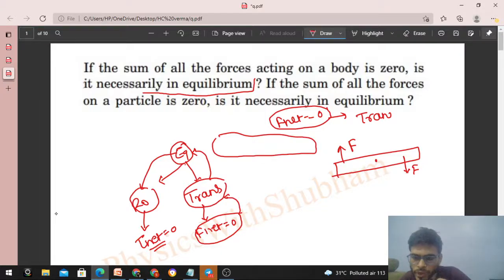But net torque on this body will not be zero. If I want to find out the torque on this body about O, where O is the center of this body, it will not be zero. Let's say this distance is R1 and this distance is R2. Then the torque will be simply R1F plus R2F.